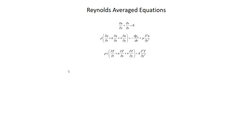The way we're going to do that is with what's called the Reynolds-averaged equations. Shown here are the equations we derived, simplified for a boundary layer: the x-momentum equation, the continuity equation, and the energy equation. I've simplified it by removing the viscous dissipation term.